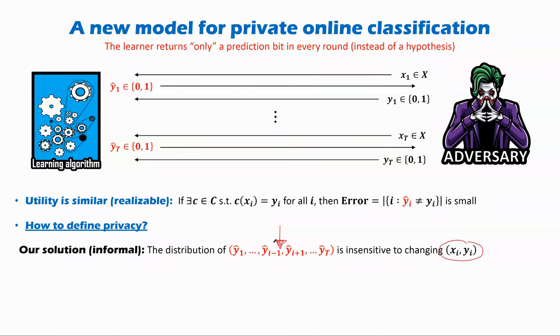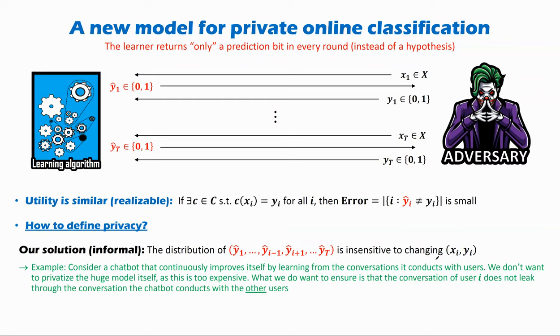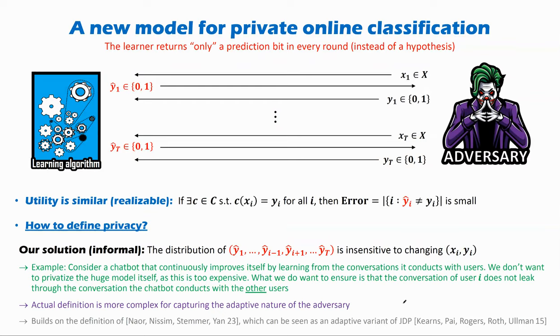Intuitively, this makes sense because of course you want the i-th prediction to depend on the i-th point, right? I'll just remark that the actual definition is more complex because we want to capture adaptive adversaries, and our definition is based on definitions presented by two prior works.